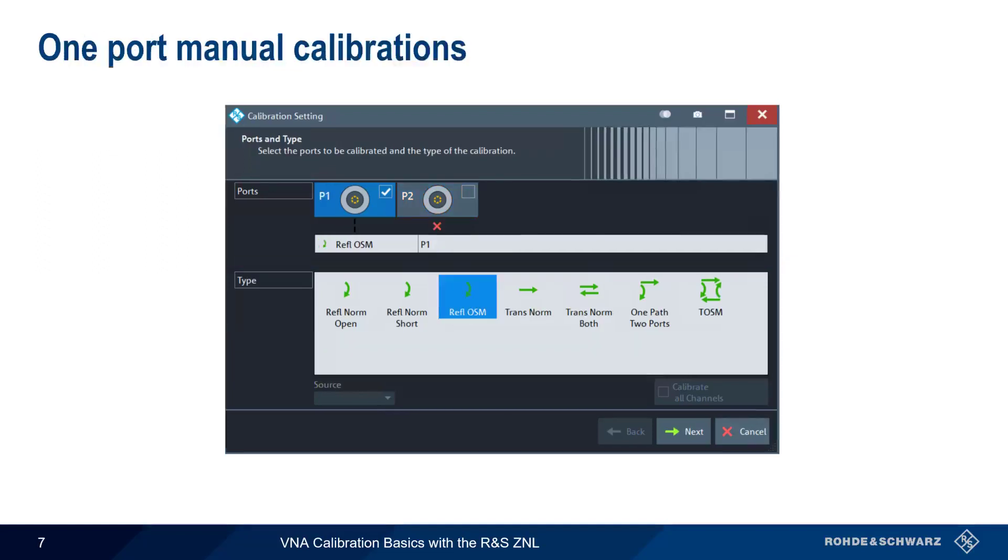Remember that there are three 1-port or reflection calibration types: normalization with an open, normalization with a short, and full 1-port calibration using an open, short, and match. Let's choose the full 1-port calibration.